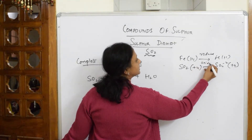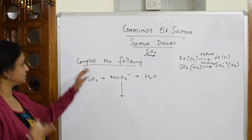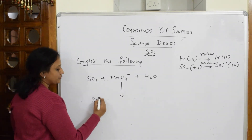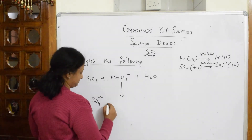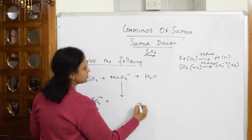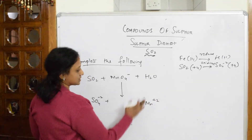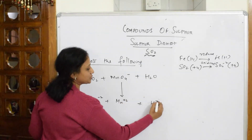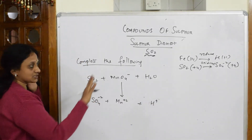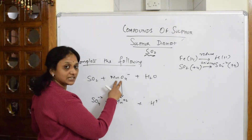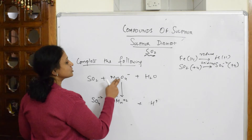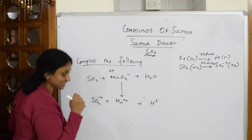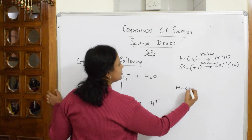Now let's apply this to a new question: complete the following reaction. SO₂ gets converted to SO₄²⁻, and MnO₄⁻ gets converted to Mn²⁺. Along with this, H₂O gets converted to H⁺. We are writing the ionic reaction. The oxidation number of manganese in MnO₄⁻ is plus seven, and in Mn²⁺ it is plus two.